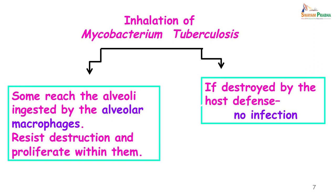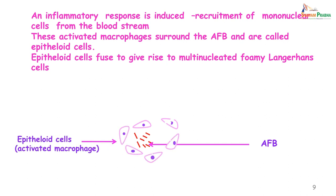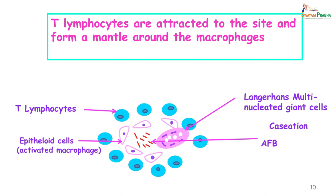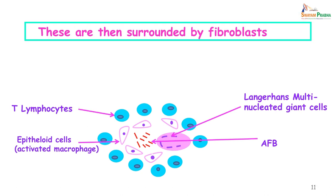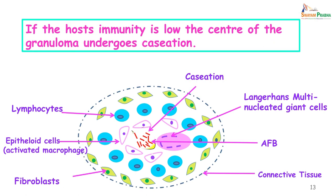What does this granuloma consist of? In the center we have the acid-fast bacilli. These are then surrounded by epithelioid cells, which are actually activated macrophages that have ingested the bacilli. These epithelioid cells stimulate an immune response and T lymphocytes arrive at the site. Many of the epithelioid cells will fuse together and give rise to a Langhans giant cell. The Langhans giant cell is a large cell which has a horseshoe-shaped nucleus and is formed by the fusion of macrophages.